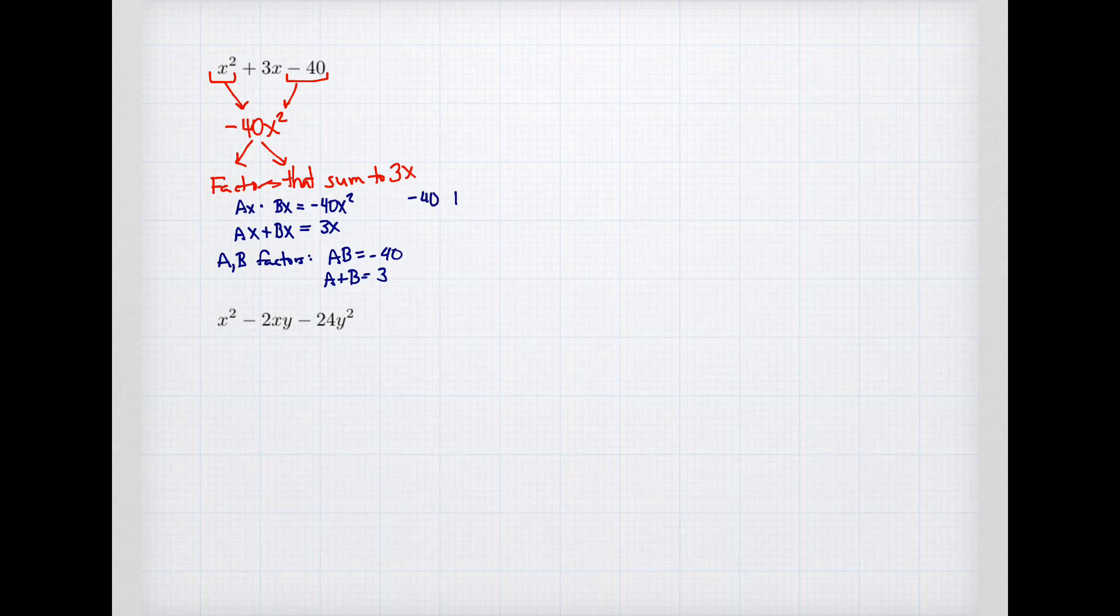So if I think about what are the factors of negative 40, maybe you jump right away to the solution. But one way to do it is to be methodical. Negative 40 and 1, no. Negative 20 and 2, no. 3 is not a factor but 4 is. That gives me negative 10. Negative 10 plus 4 is negative 6. 5 is a factor with negative 8. And then we start going the other direction. Negative 5. And we suddenly hit on the pairing negative 5 and 8.